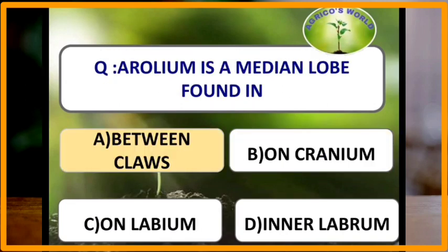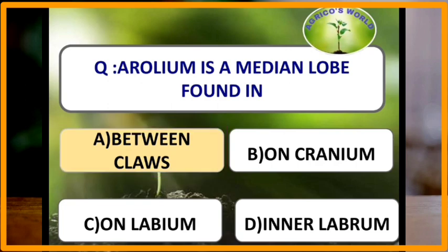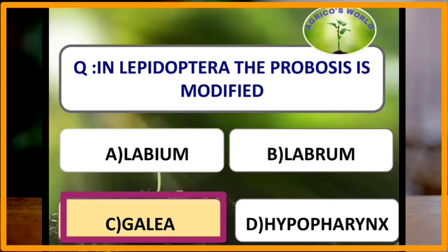Arolium is the median lobe found between the claws of an insect. In Lepidoptera, the proboscis is a modified galea — the galea of the maxilla forms into a slender hollow tubular structure which remains as an elongated coiled proboscis underneath the head during non-feeding.